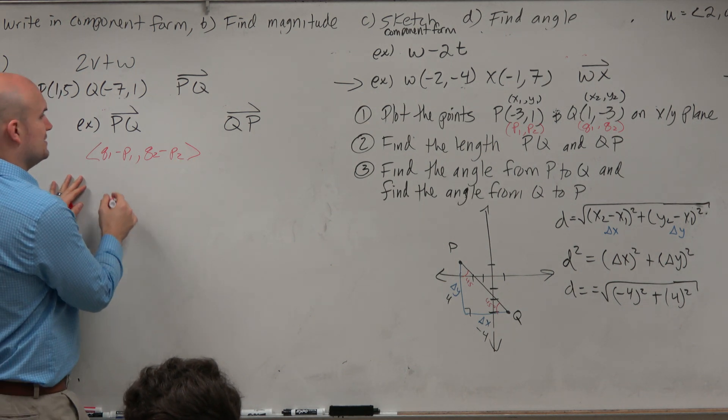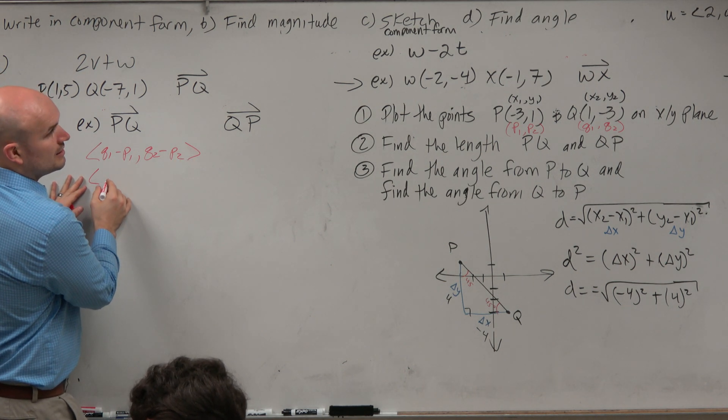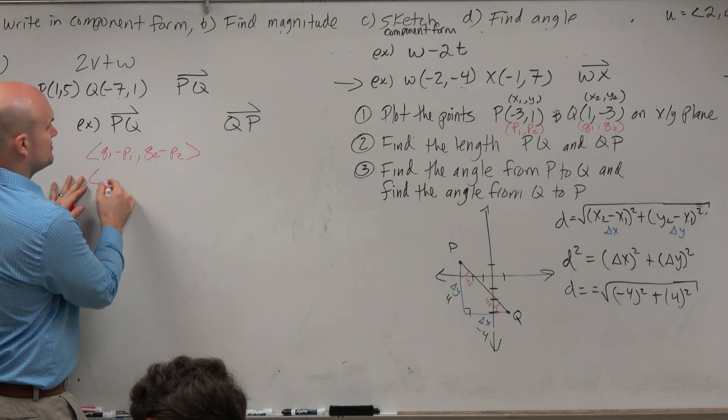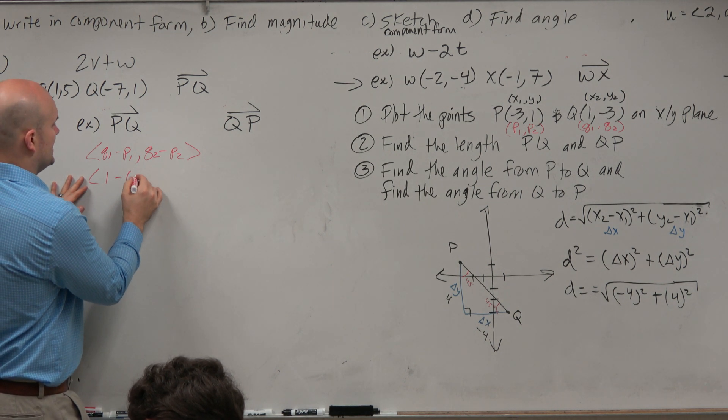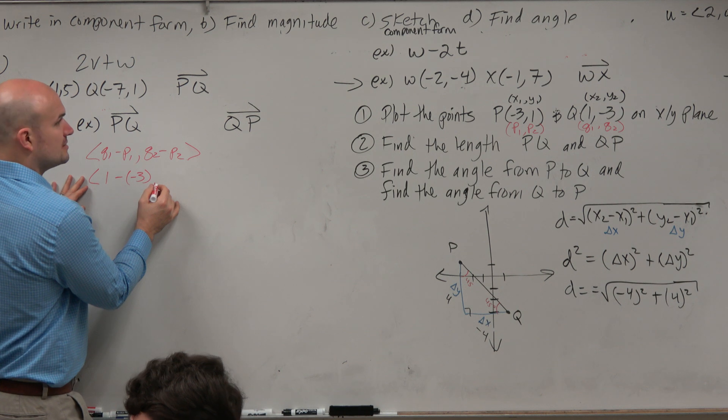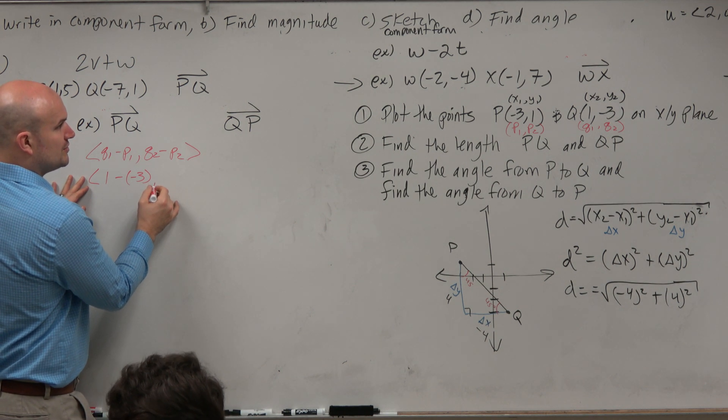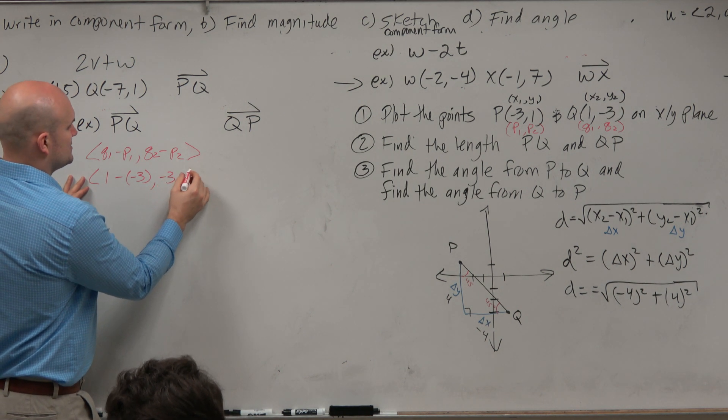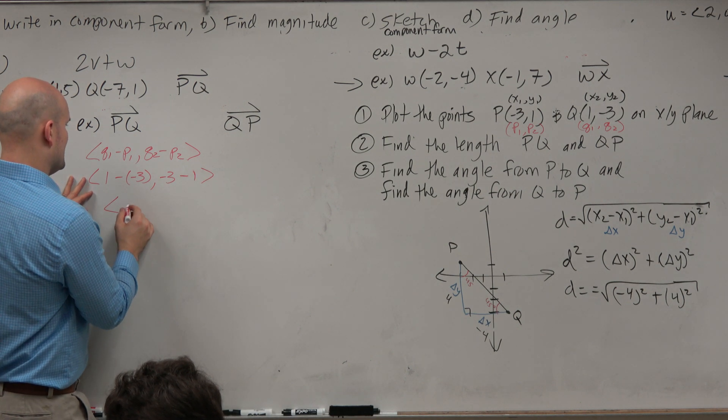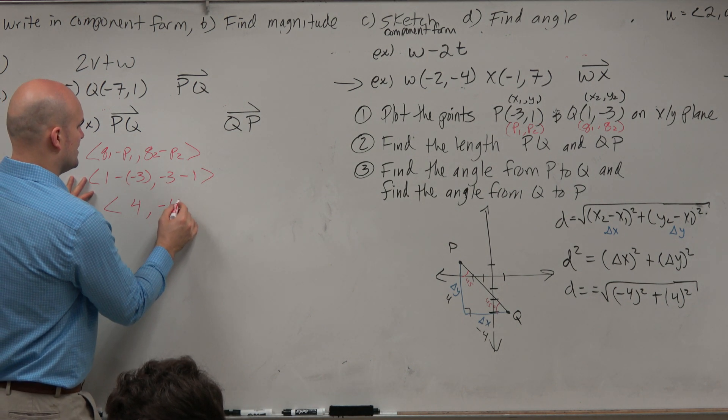We can go ahead and do our math here. Q1 is going to be 1 minus negative 3. Be careful with your parentheses. And then Q2 is negative 3 minus 1. Therefore, this gives me a vector of 4, negative 4.